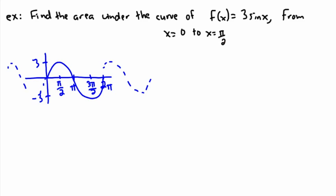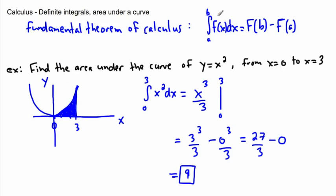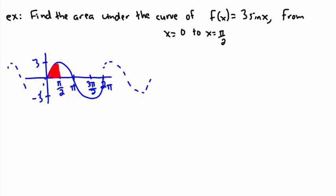I want to find the area from 0 to pi over 2 — so what I'm really trying to find is this area right here. Again I can use the fundamental theorem of calculus. The idea is the same: if I know the bounds, I take the antiderivative and evaluate it at the upper bound, subtract the antiderivative at the lower bound. So we need to find the antiderivative of sine, and the antiderivative of sine is negative cosine.